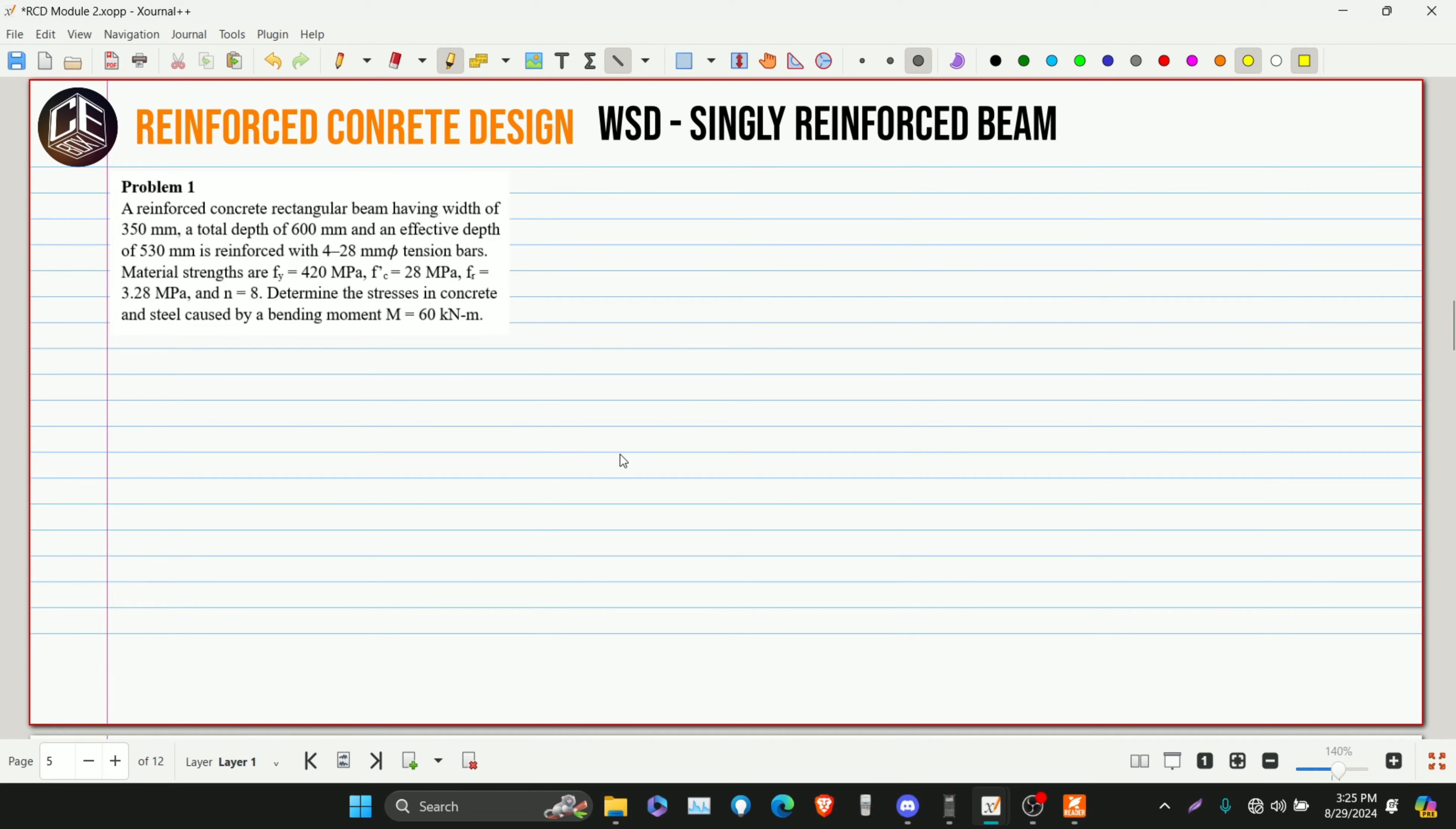This is our problem number one for reinforced concrete design, WSD, singly reinforced beam. A reinforced concrete rectangular beam having a width of 350mm and a total depth of 600mm and an effective depth of 530mm is reinforced with 4-28mm diameter tension bars. Material strengths are FY equivalent to 420MPa and F'C is 28MPa and the modulus of rupture is 3.28MPa. The modulus ratio is equivalent to 8.